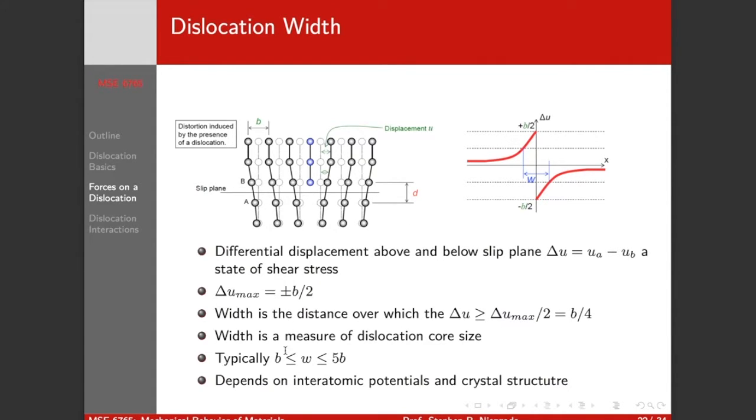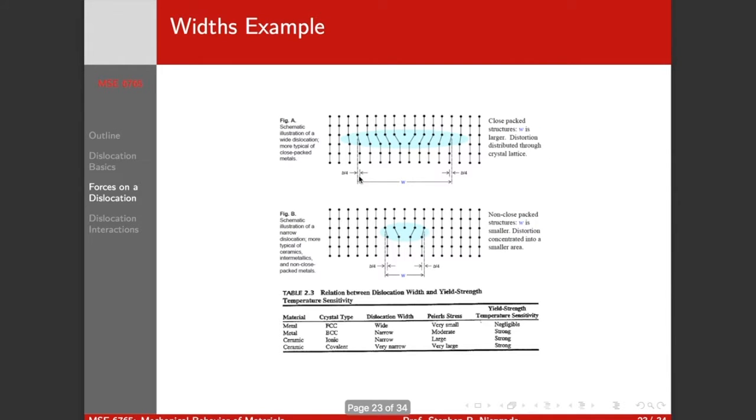We're going to define the width as the distance where our differential displacement is greater than one-half of our maximum, which gives us our differential displacement of Burgers vector by 4. And usually we have to go out, depending on the crystal structure and type of bonding, typically between one and five Burgers vectors distance, which we've defined as our width.